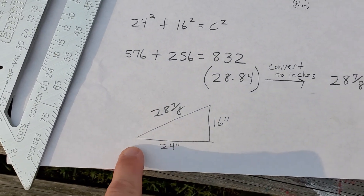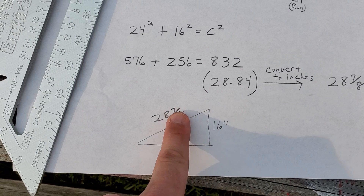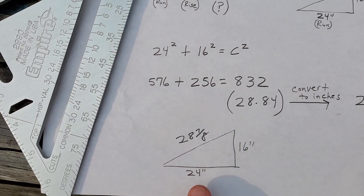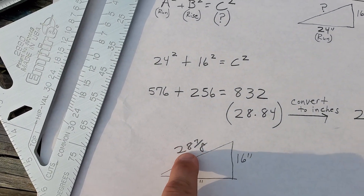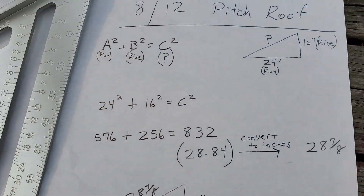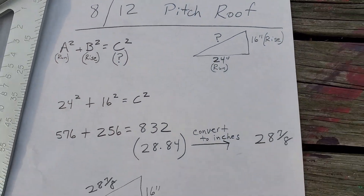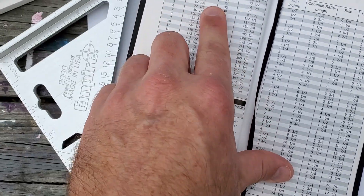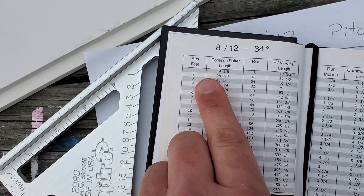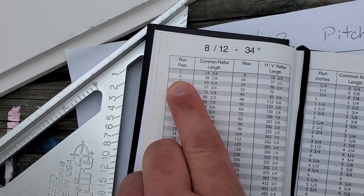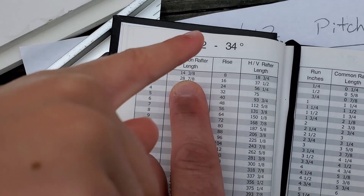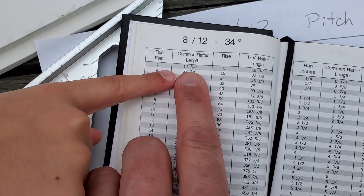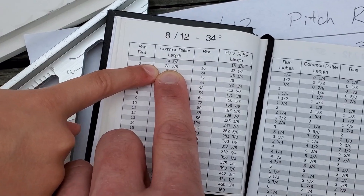So 24 is the run, 16 is the rise, and 28 and 7/8 is the rafter length. Now I'm going to show you in the book where this number is verified. If I go into my rafter book, go to 8/12 pitch roof and look up two feet, you can see right here: 28 and 7/8 of an inch.